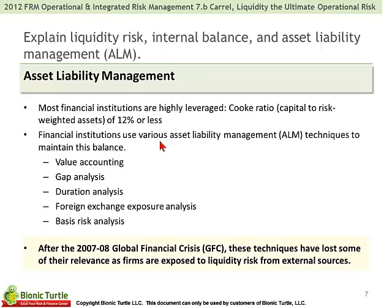He makes a point that because most institutions are highly leveraged — and this really is by definition, if we think about a bank — he makes a reference to the Cook ratio, which is really the Basel regulatory ratio. Even back to the original Basel Accord, that Cook ratio of a bank's capital to risk-weighted assets needs to be at least 8%. In general, even banks will have Cook ratios in the single digits or low double digits, meaning the equity or capital to risk-weighted assets is still fairly low. A bank and most financial institutions by definition are leveraged.